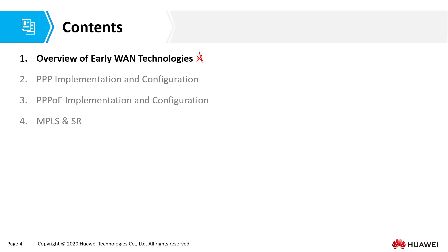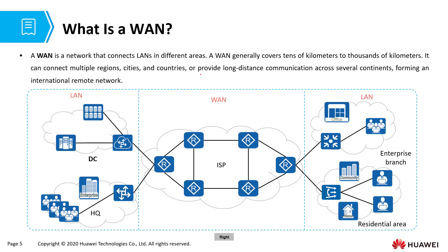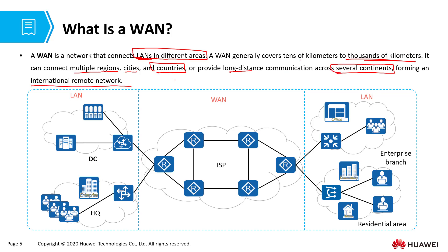Let's get on with the first one. Before we look at WAN technologies, what exactly is a WAN? A wide area network is a network that connects local area networks in different areas. It generally covers tens of kilometers to even thousands of kilometers. It can connect multiple regions, multiple cities, or even countries, and can even provide long-distance communication across several continents, forming an international remote network.